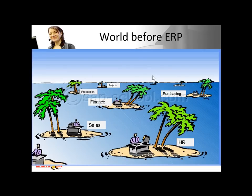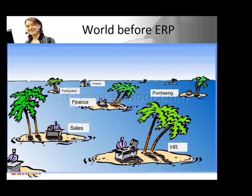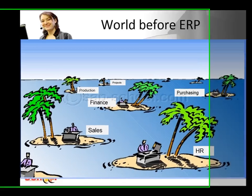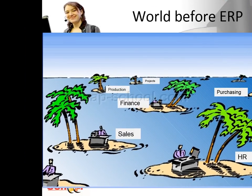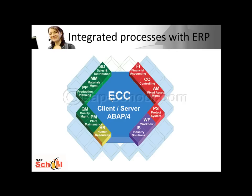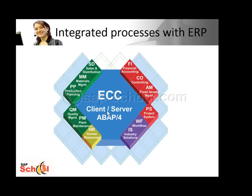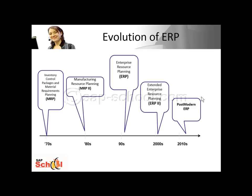Another way to look at the world before ERP is in terms of islands of information — the sales island, the HR island, and so on. This makes it difficult to get timely and accurate information, results in heterogeneous hardware and software platforms and practices, and poor connectivity between different organizational locations. All those islands are brought together in the centralized database of an ERP system, providing an integrated system and consistent look and feel across the different functional areas.